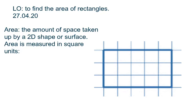Good morning Year 5. Today we're going to be looking at finding the area of rectangles. We've got a definition there for you. Area equals the amount of space taken up by a two-dimensional shape or surface. Area is measured in square units.